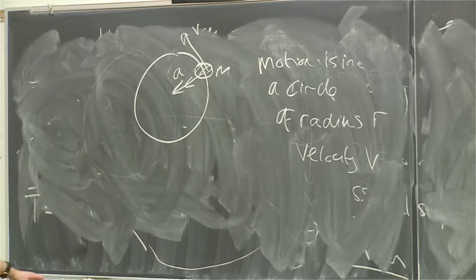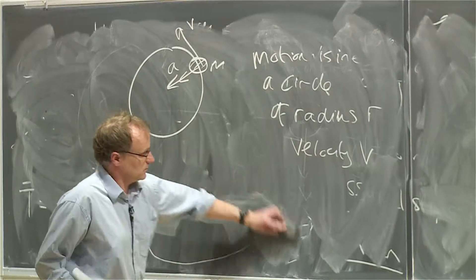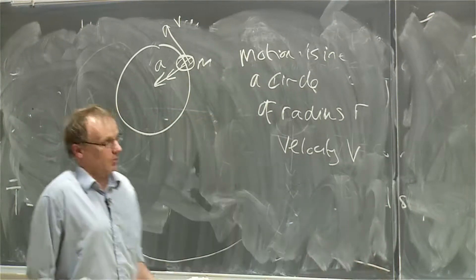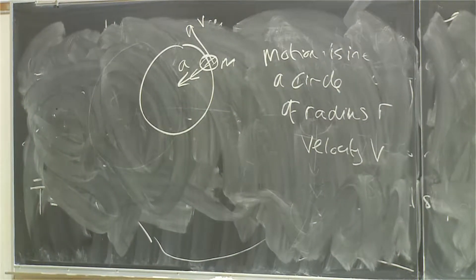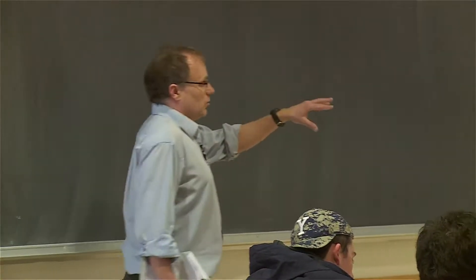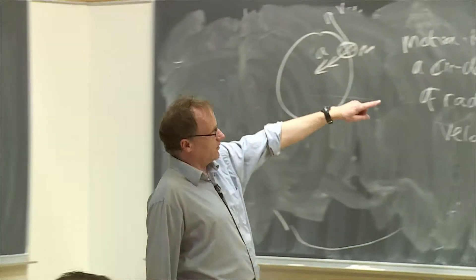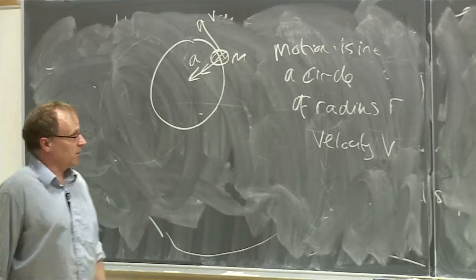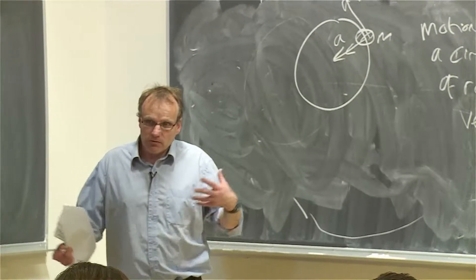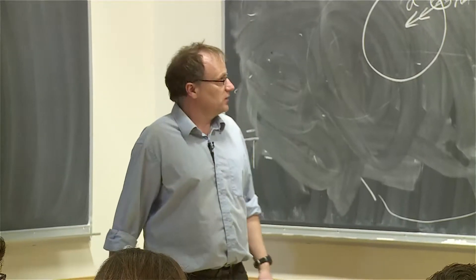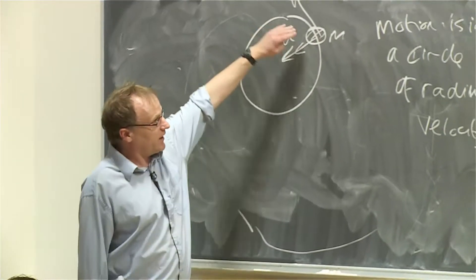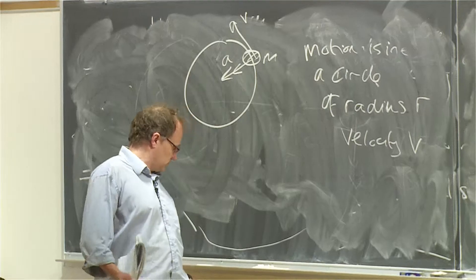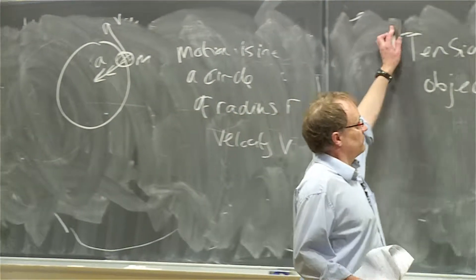So the motion is in a circle of radius R and velocity V. So to find out what the acceleration is, what we're going to do is we're going to do something similar to the way that we did drag. We know what the units are of acceleration, radius, and velocity. So we use something called dimensional analysis to figure out the relationship between A, R, and V. And this is done in the following way.